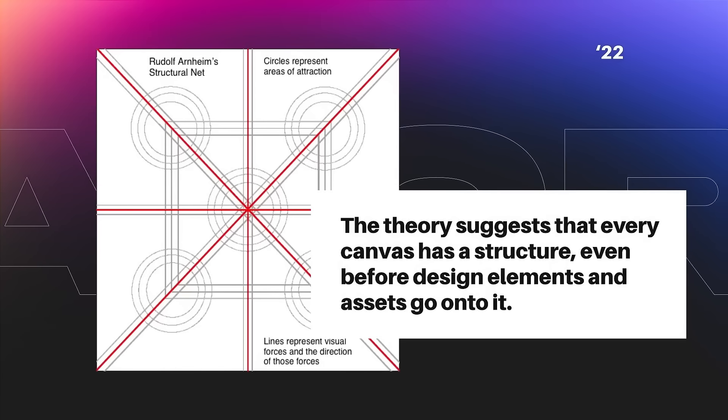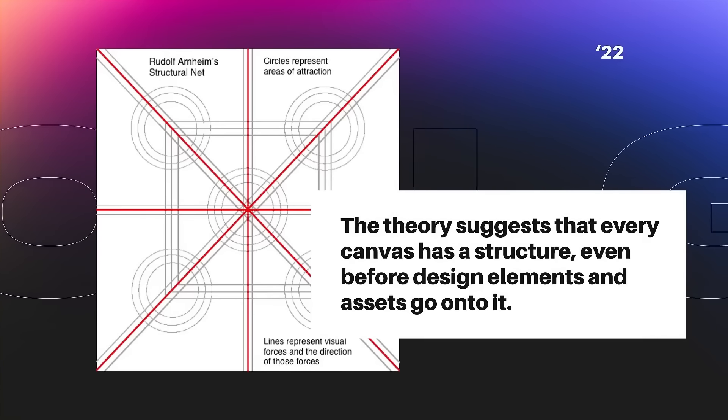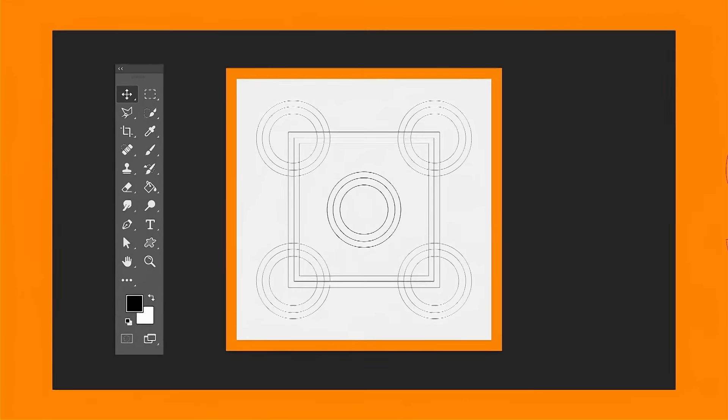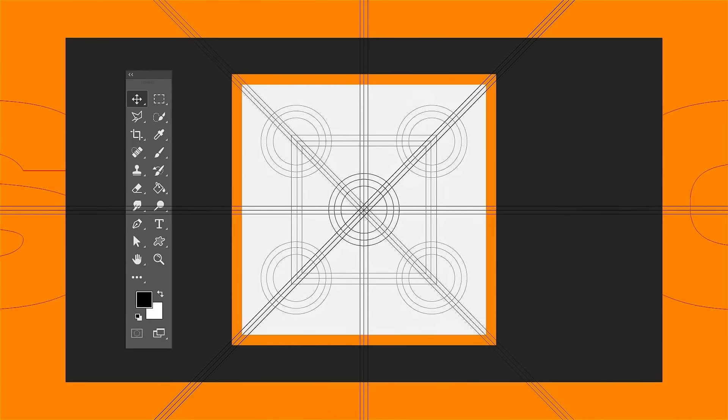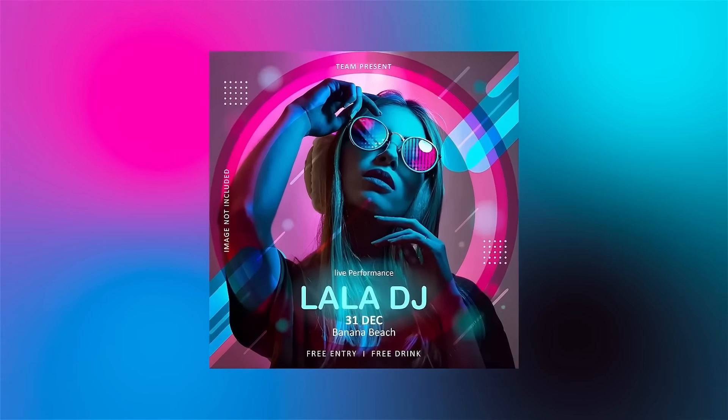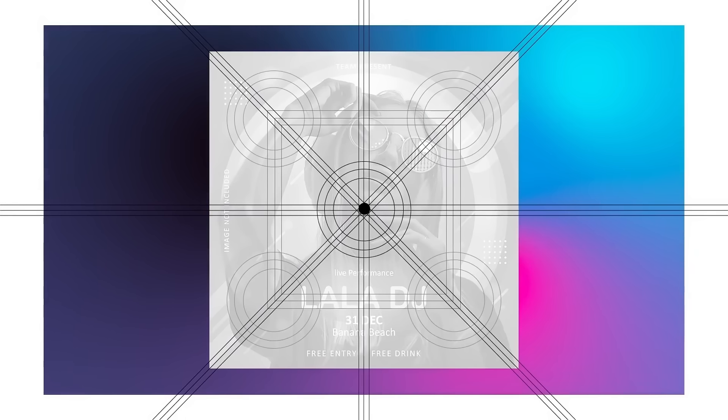The fourth aspect is structure, where Rudolf Arnheim's structural nets comes into play. The theory suggests that every canvas has a structure even before design elements go onto it. The structure starts with a point of focus centrally — though slightly higher than the exact center — where most eyes will naturally land. Then axes run from corner to corner, and midway points along these axes also attract attention. These midway points can be connected with vertical and horizontal lines, creating additional axes of visual force. The eyes will follow these paths and land on points of interest.